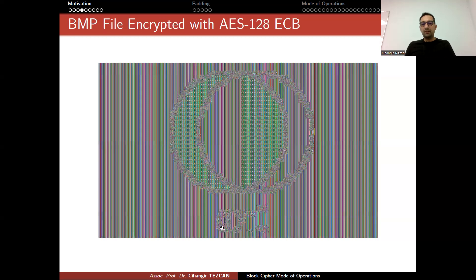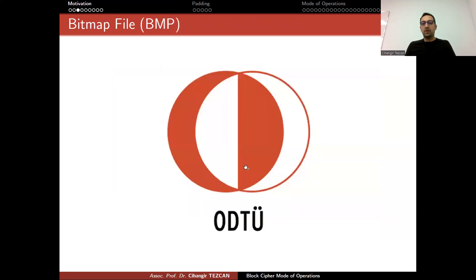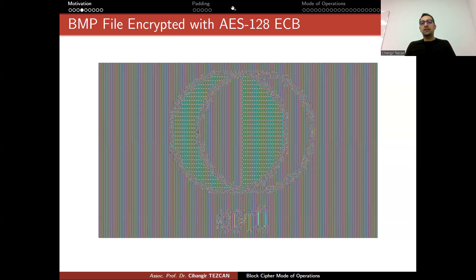So let's go back to the original picture, and this is the encrypted version. As you can see, we can even read the name of the university, OTTU. We can easily understand what the picture is all about. So you are using an encryption algorithm that is used by the whole world. AES is responsible for almost the whole encryption in the world right now. But due to bad choice of mode of operation, now everything leaks.